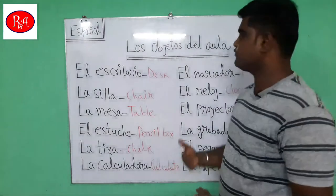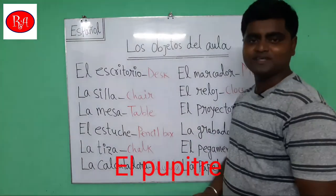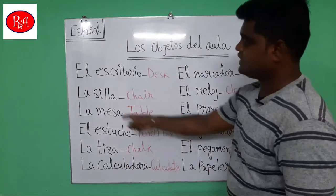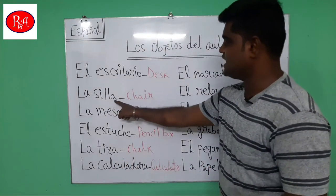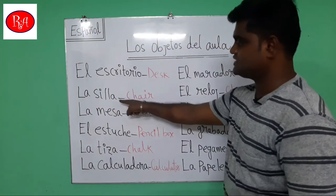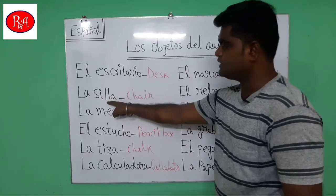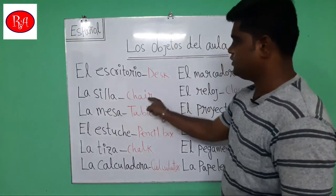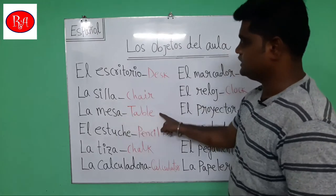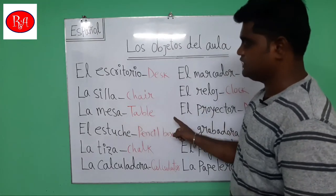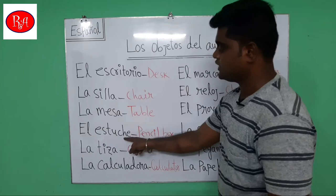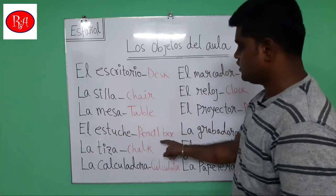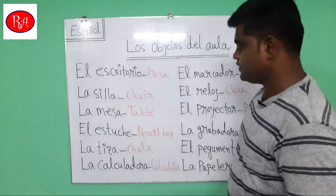There is also another word for desk: el pupitre — el pupitre. Next word: la silla — la silla — that means chair. Remember, double L is pronounced like a Y, so la silla. La mesa — that means table. El estuche — el estuche — that means pencil box or pencil case.